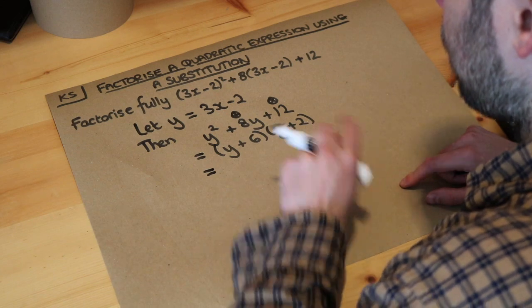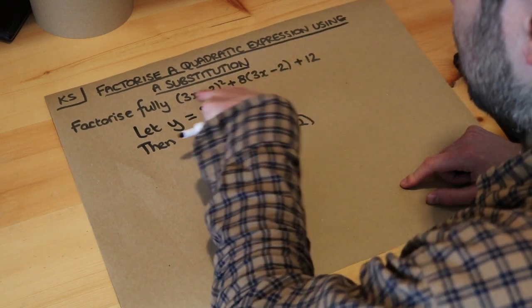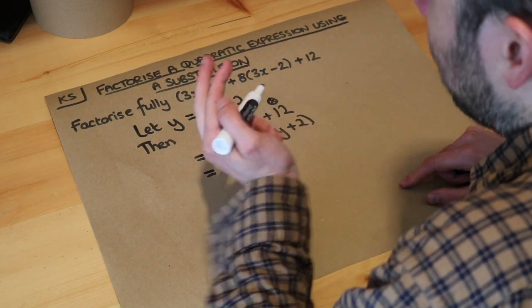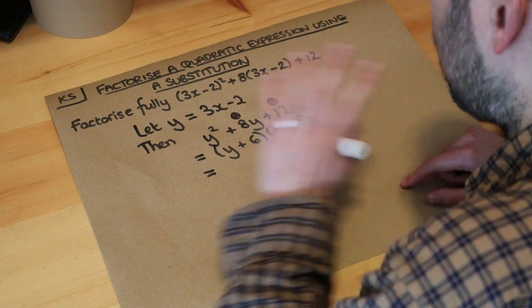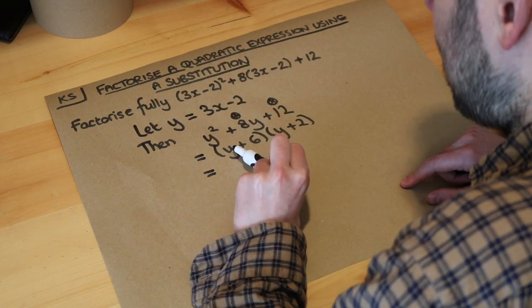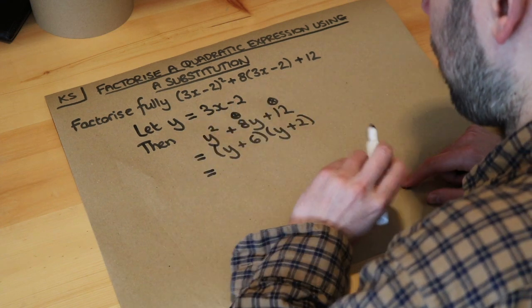Now at this point we want to get a factorisation that's just in terms of x. Y was just something we made up for the purposes of helping us with the question. Y doesn't actually exist. So we need to replace the y back for 3x minus 2.